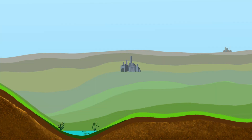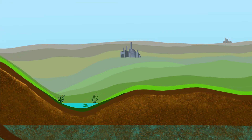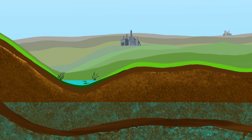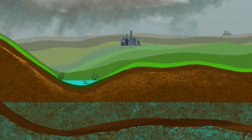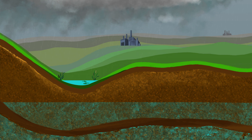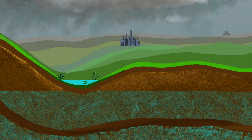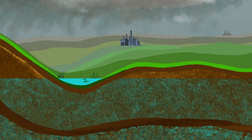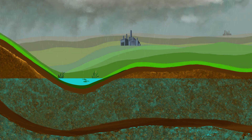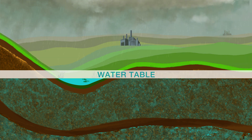An unconfined aquifer is a body of water that is in sediment or rock just beneath the ground surface. Unconfined aquifers receive direct infiltration from the surface when it rains and snows. The surface of the saturated zone is the water table, thus sometimes these are called water table aquifers.